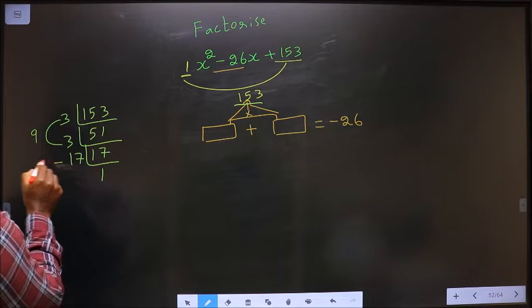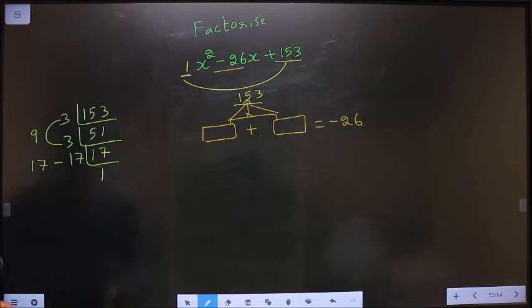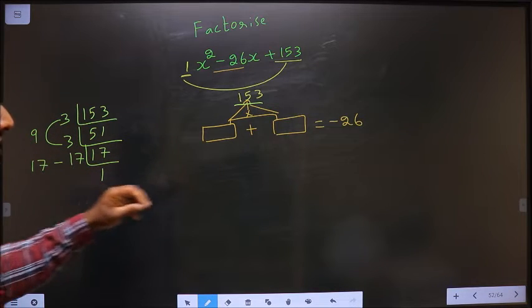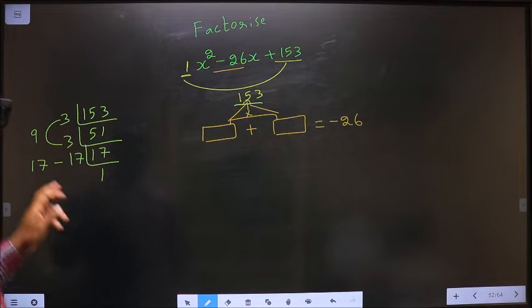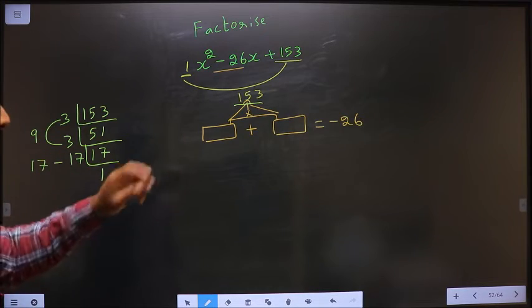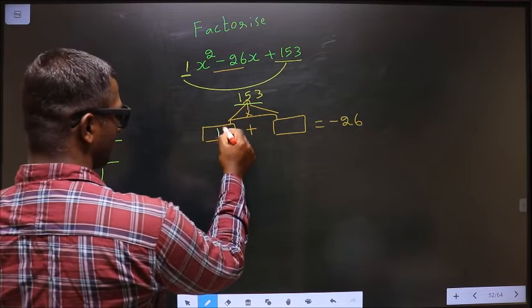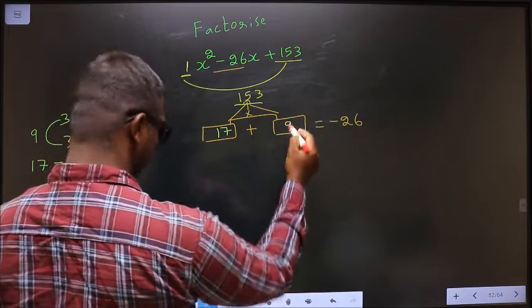17 plus 9 is 26. 17 into 9 is 153. So 17 and 9.